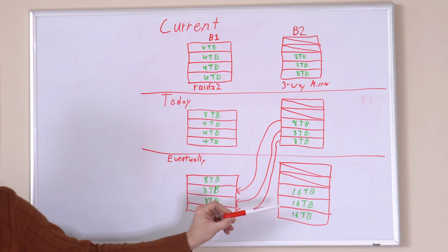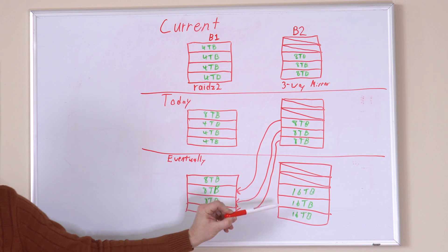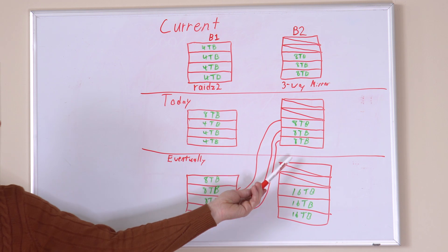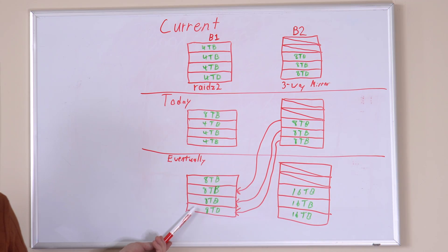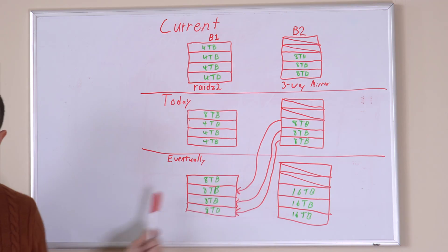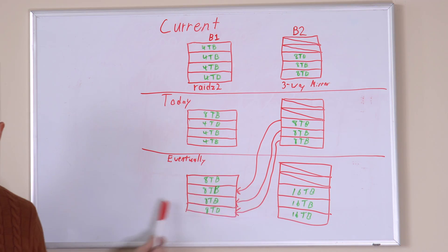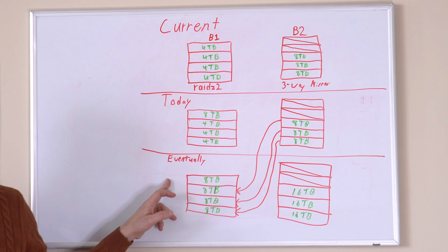My eventual goal will be to buy some 16TB drives, and those 16TB drives will replace the three 8TB drives in the mirrored array. Once those 8TB drives are free, I can use those to finish off upgrading the RAID Z2 pool. But this part will be a much longer term thing.